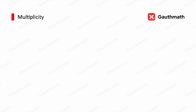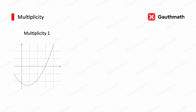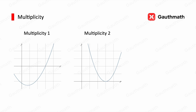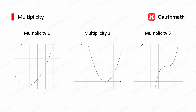How does multiplicity affect the graph? If the multiplicity is 1, the graph passes through the x-intercept directly. If the root has a multiplicity of 2, the graph touches the x-intercept and then bounces back. If the x-intercept has a multiplicity of 3, the graph passes through the x-intercept but flattens a little bit.